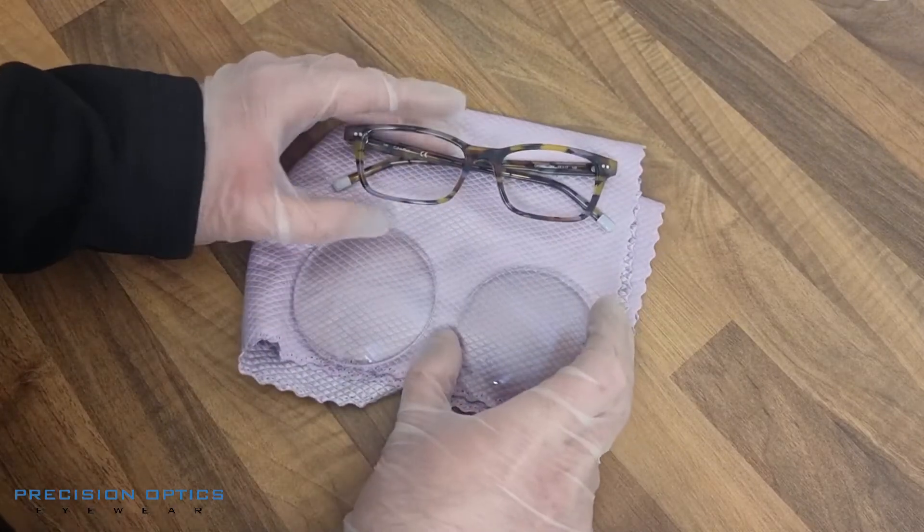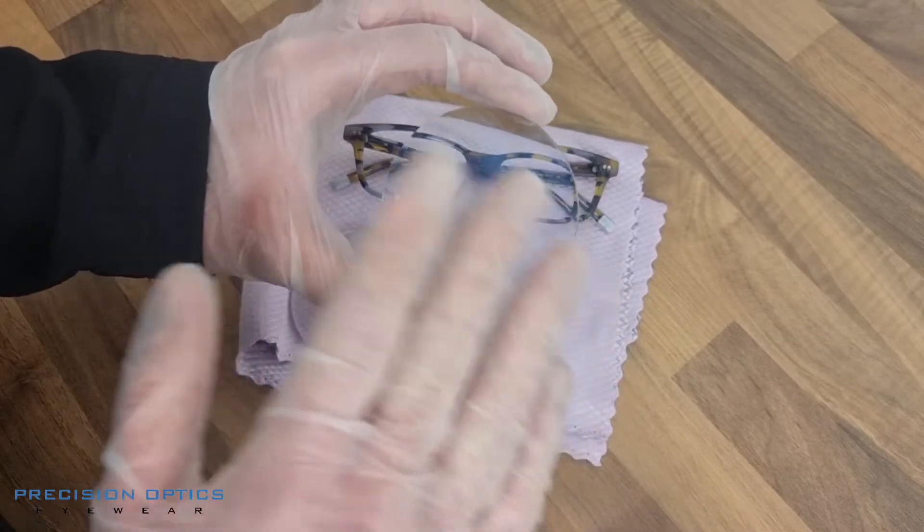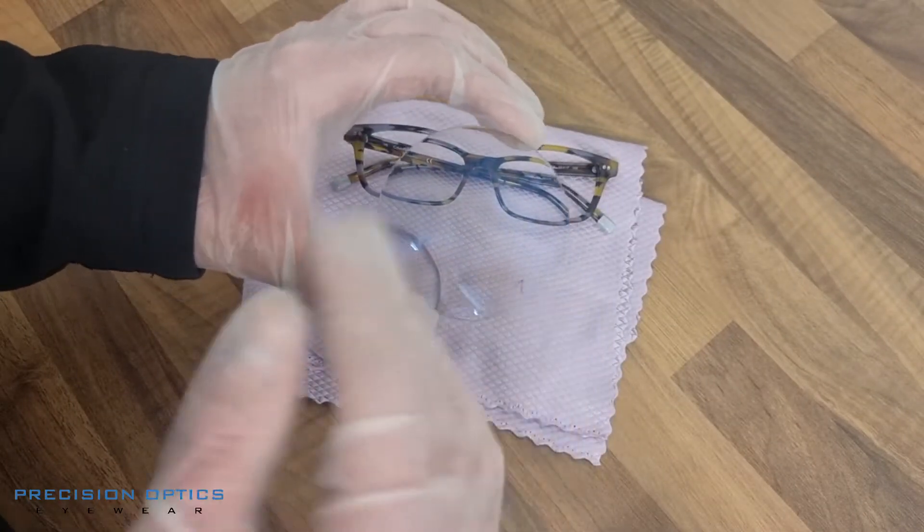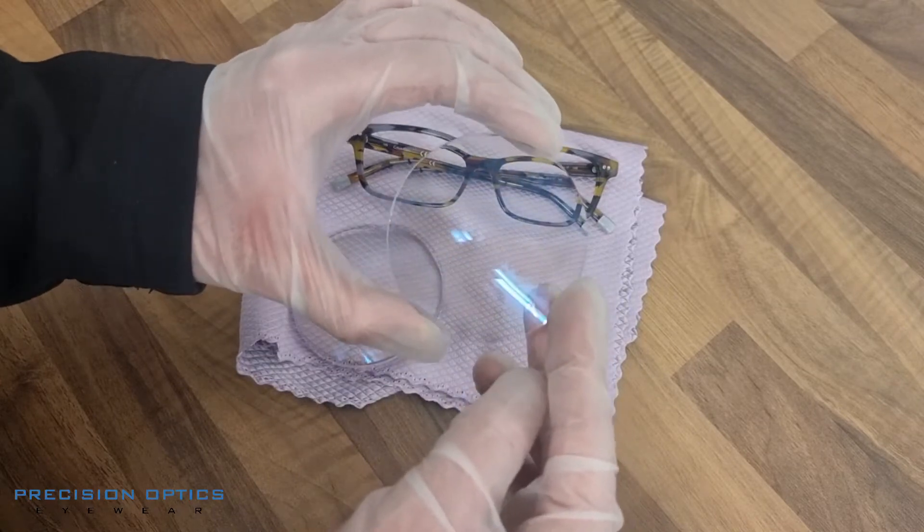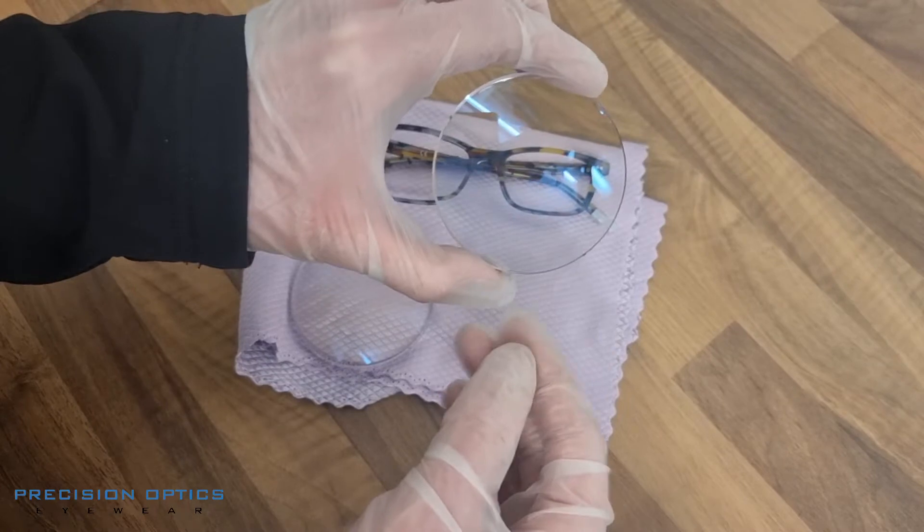Hi guys, Colin here from Precision Optics Eyewear. In this video I'm making a pair of our special driving lenses. They've got lots of coatings and qualities about them. They're UVA and UVB protected, they've got an enhanced anti-reflective coating for helping with car headlights and street lights at night, and we've also got a slightly higher contrast filter on as well.